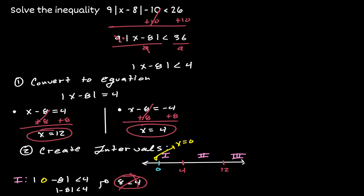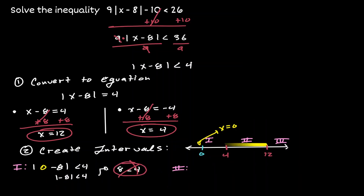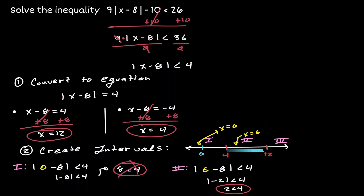Now let's test the second interval. Let's choose any number between 4 and 12 — I'm going to choose 6 — and plug it into the simplified inequality. Inside the absolute value we get negative 2, and the absolute value of negative 2 is just 2. Notice that 2 is less than 4 — that's a true statement. So the second interval, from 4 to 12, is going to be part of our solution.